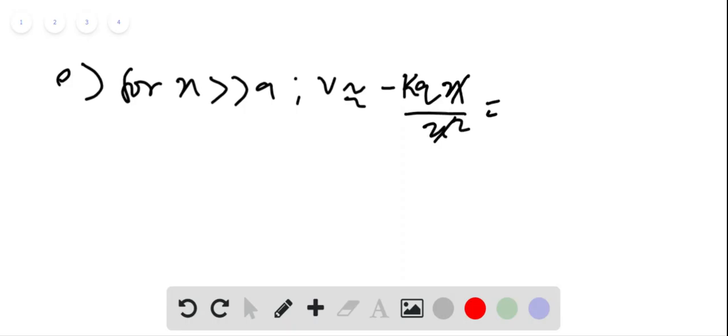Part E of the problem: for x much, much greater than A, we can write potential will be approximately equal to minus kq divided by x over x squared. So cancelling x, we get minus k times q divided by x.